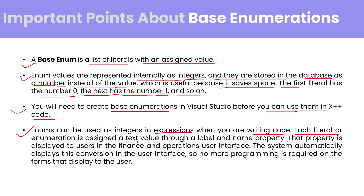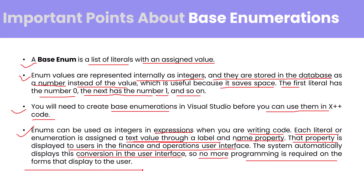Whenever each literal of the enumeration is assigned a text value through the Label and Name properties — I'll show you how to create the name of a literal and assign the text value in the label section — that property is displayed to the user in the Finance and Operations user interface. The system automatically handles the conversion in the UI, so no additional programming is required on the form displayed to the user.